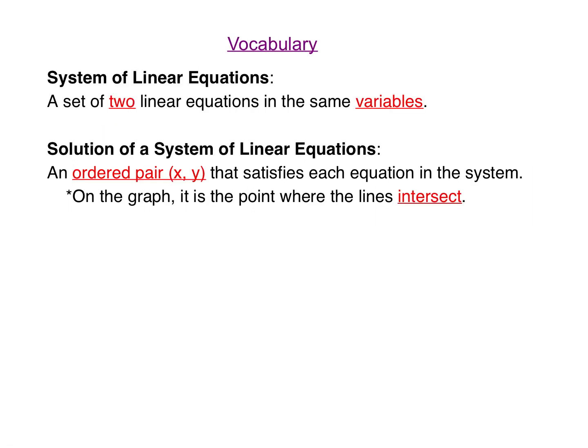A system of linear equations is a set of two linear equations in the same variables — most often those variables are going to be x and y. The solution of the system of linear equations is an ordered pair (x, y) that satisfies each equation in the system. When we solve a system by graphing, it will be the point where the lines intersect. We'll graph the two lines in the same coordinate plane and look for that intersection point, writing it as an ordered pair with the x-coordinate first and the y-coordinate second.